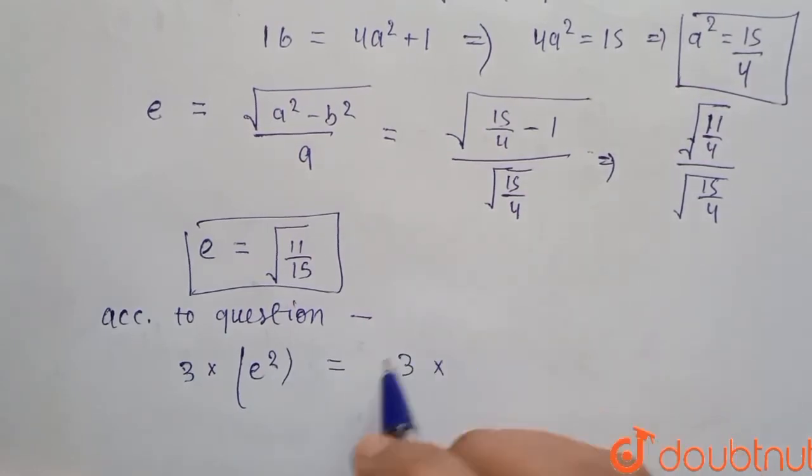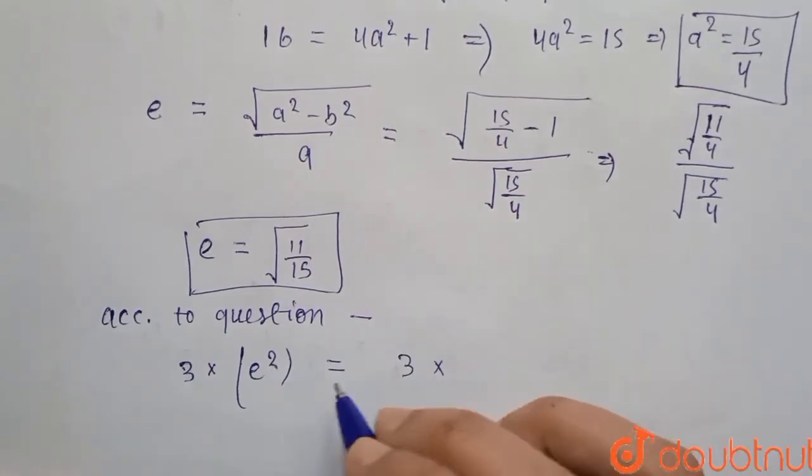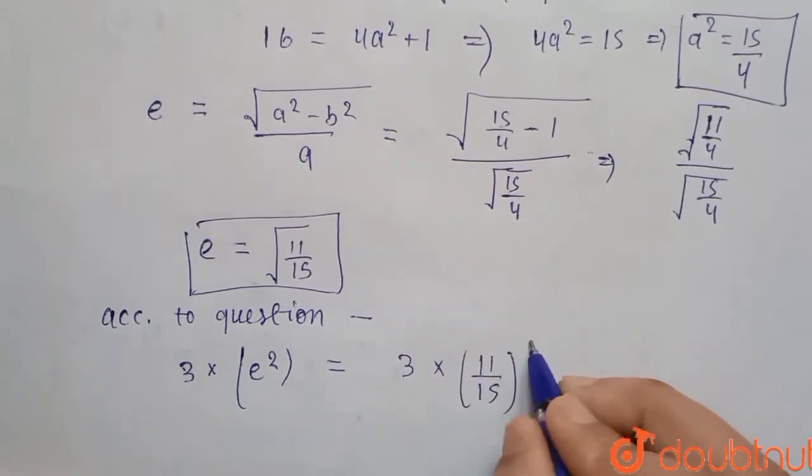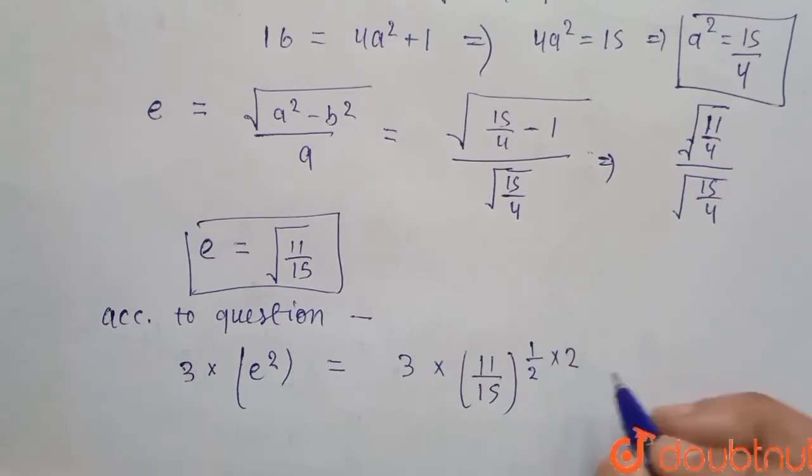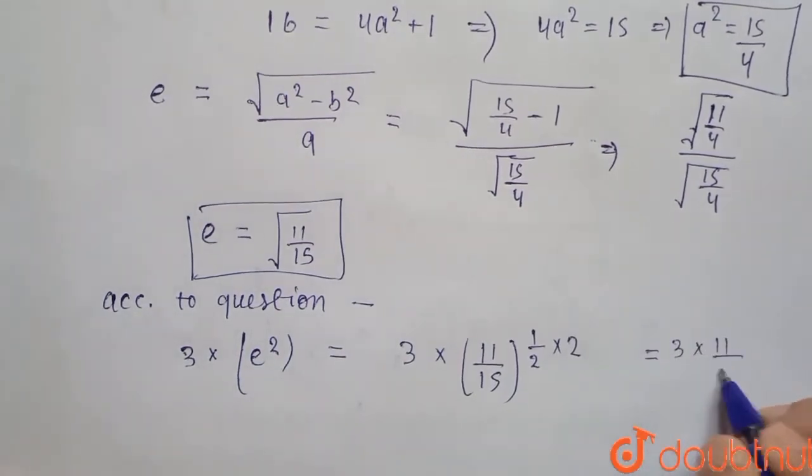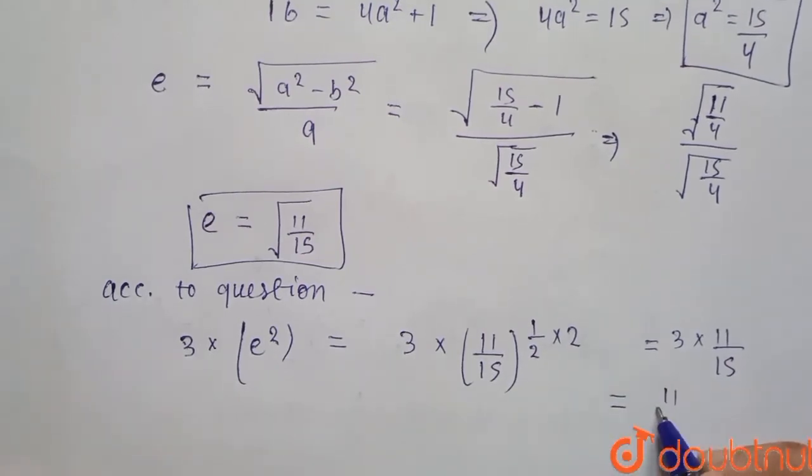3 × e² = 3 × (√(11/15))² = 3 × 11/15, which is equal to 11/5.